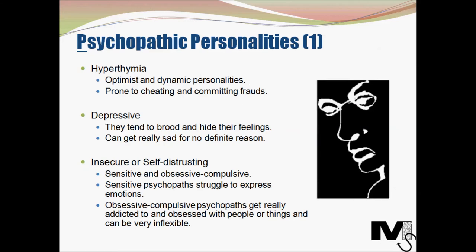The first type is hyperthymia. Hyperthymic psychopaths are optimistic and dynamic personalities. They like taking initiatives but can be quite hot-blooded and impulsive. They essentially have hyperactive minds — that's why it's called hyperthymia. Their personalities make them prone to cheating and committing fraud, but they are not normally capable of very serious crimes.